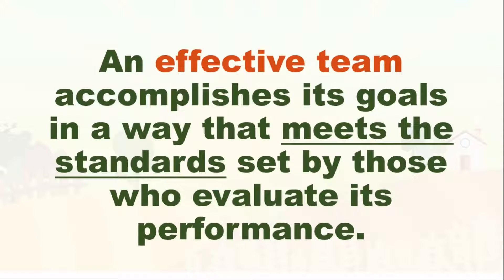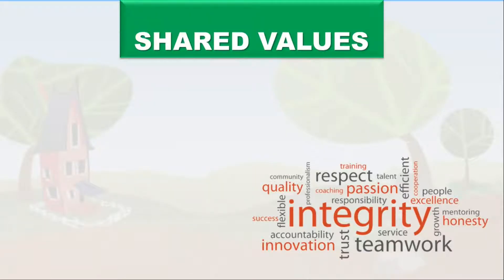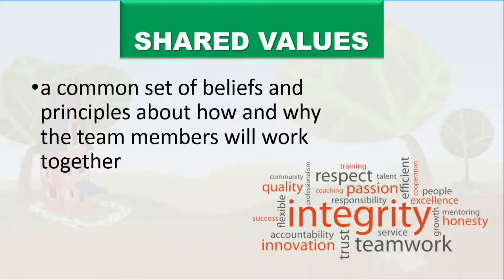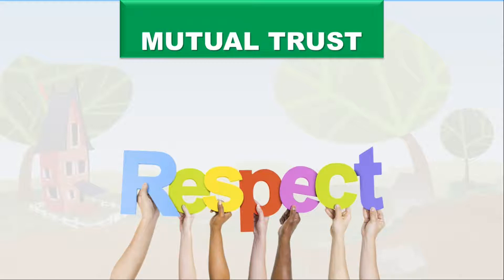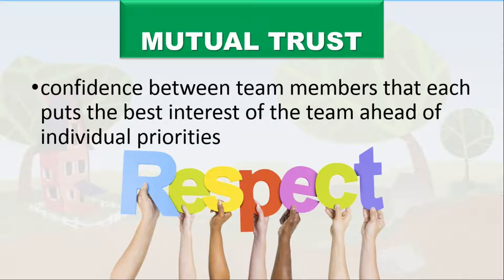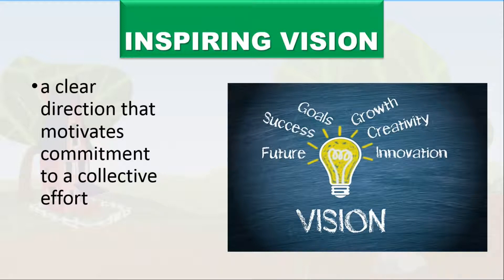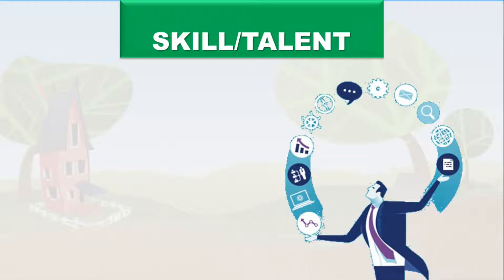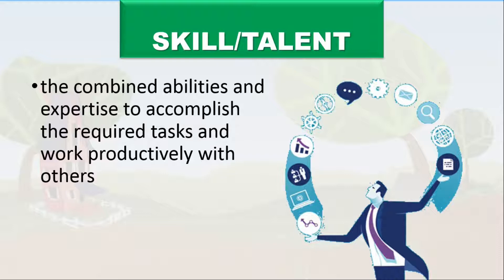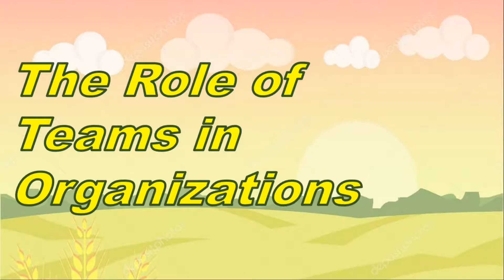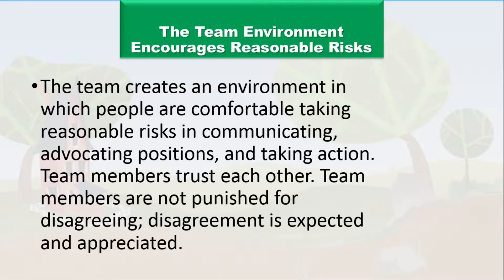An effective team accomplishes its goals in a way that meets the standards set by those who evaluate its performance. First, shared values: team members have a common set of beliefs and principles about how and why they work together. Mutual trust: there is respect and confidence between team members, with each putting the team's best interests ahead of individual priorities. Inspiring vision: a clear direction that motivates commitment to a collective effort. Skills and talent: the combined abilities and expertise to accomplish required tasks and work productively with others.